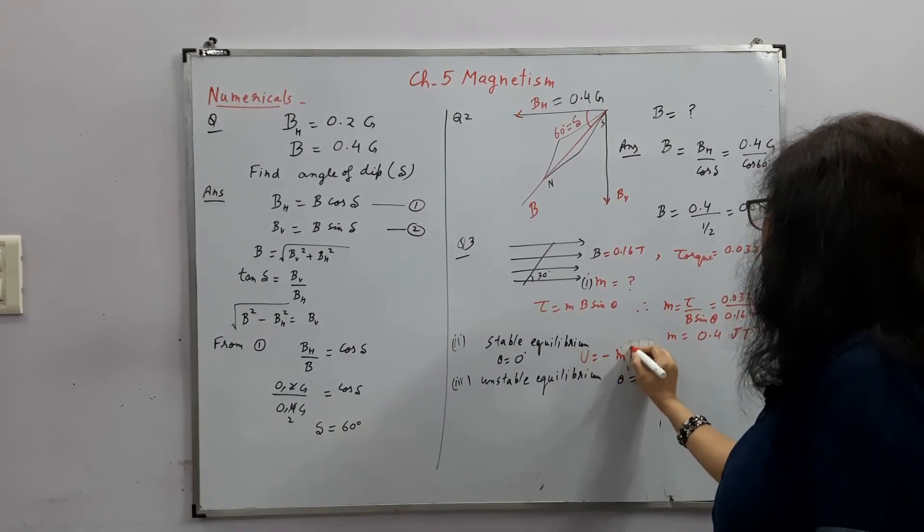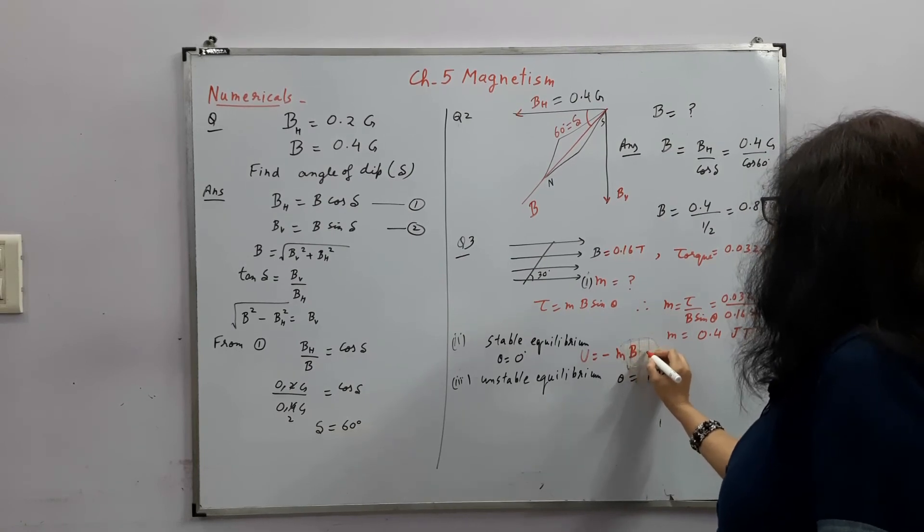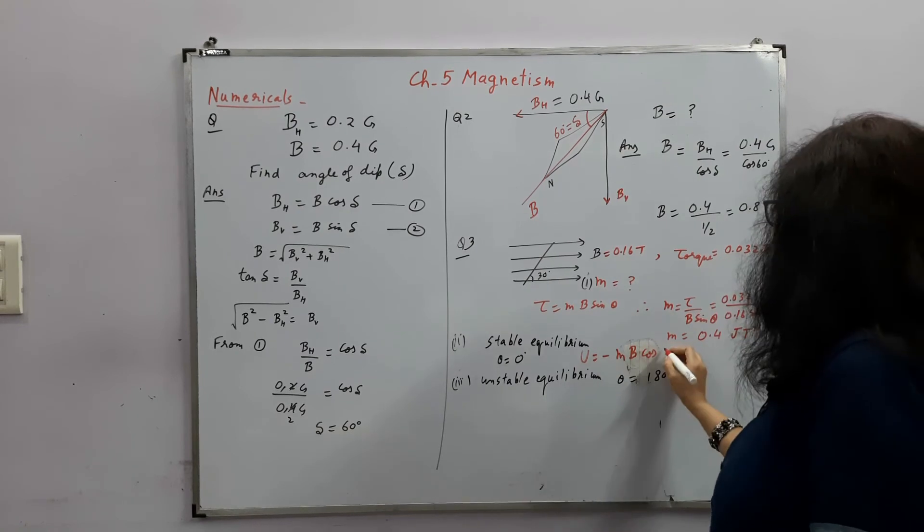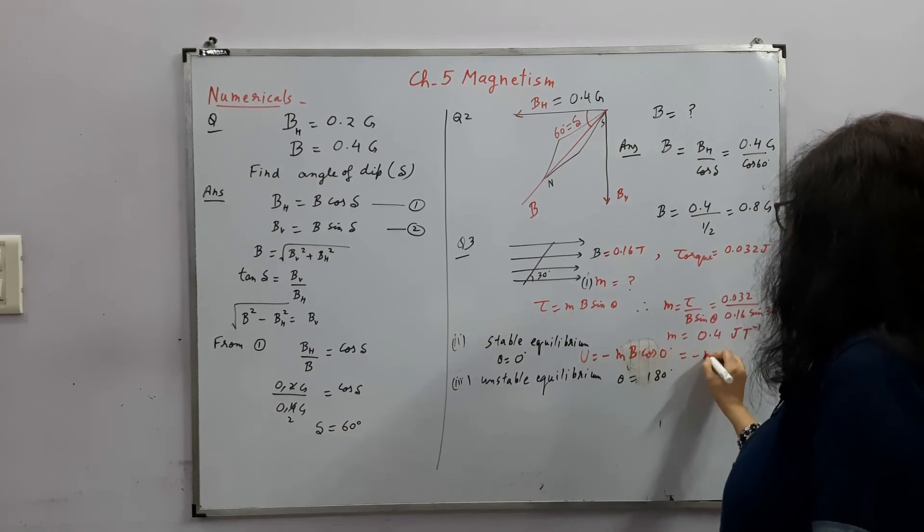For this case, what is the potential energy? Minus Mb cos of 0 degree. So this will be minus Mb.